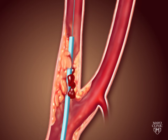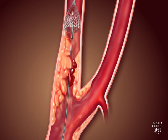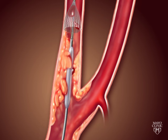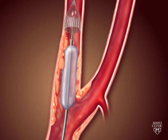An umbrella-shaped filter is inserted beyond the narrowing to catch any plaque or debris that may break off during the procedure. Then a tiny balloon at the end of the catheter is inflated to push the plaque to the side and widen the vessel.